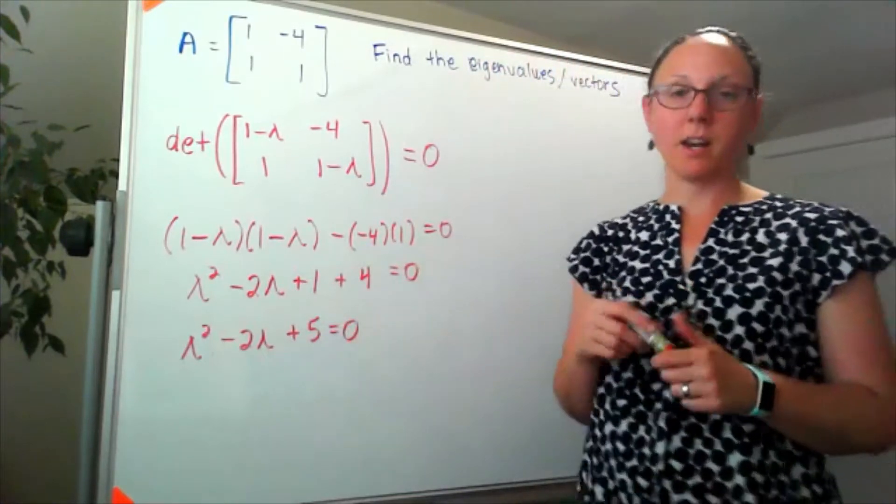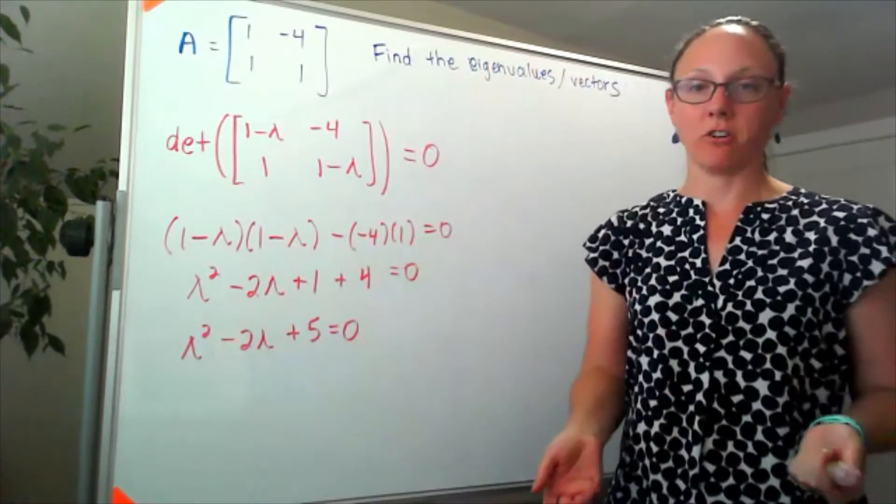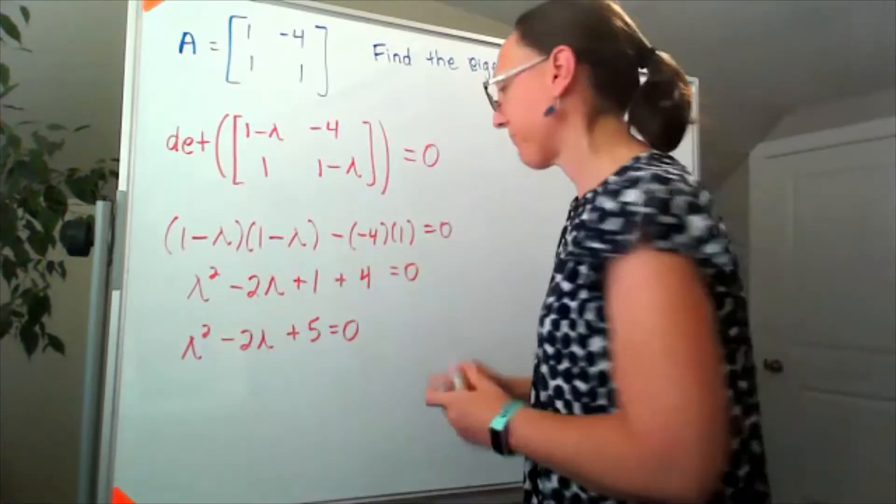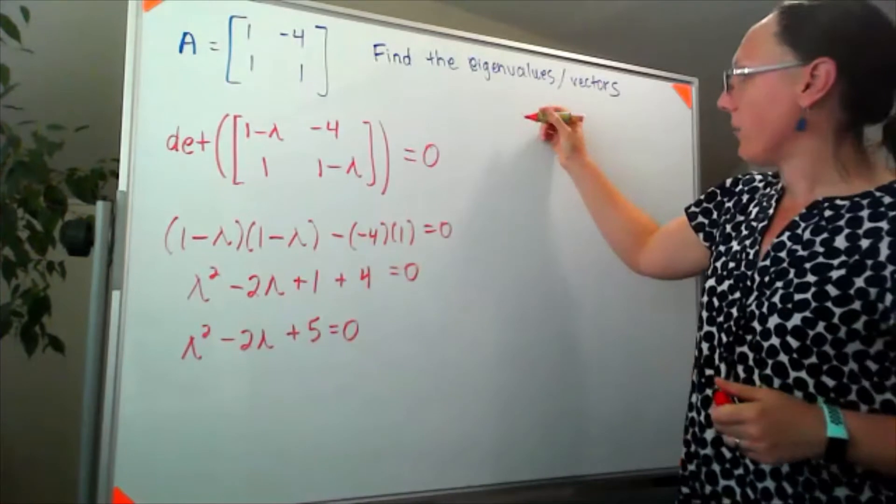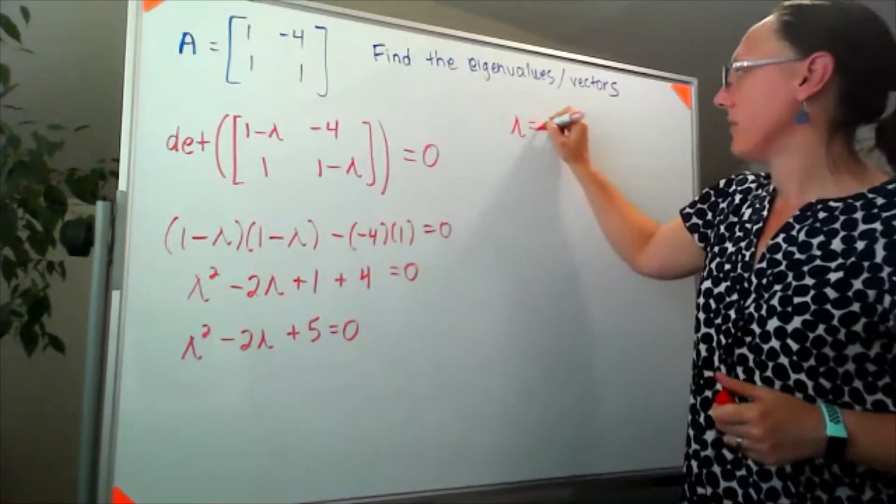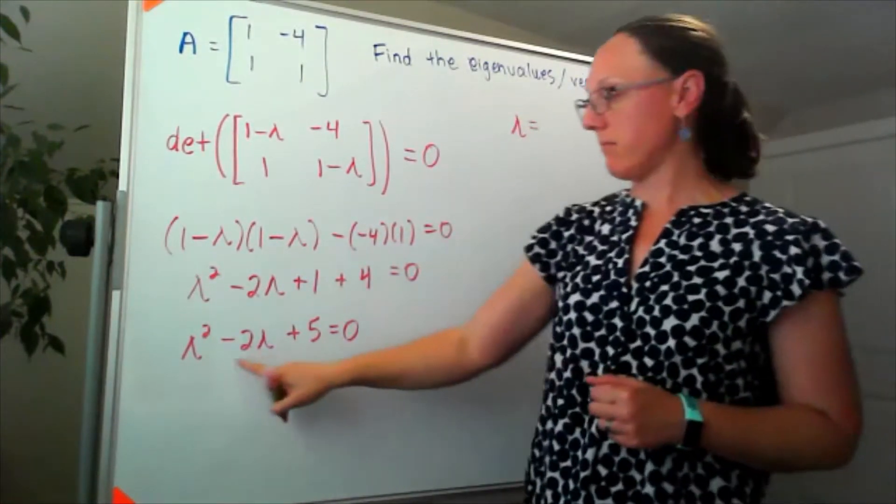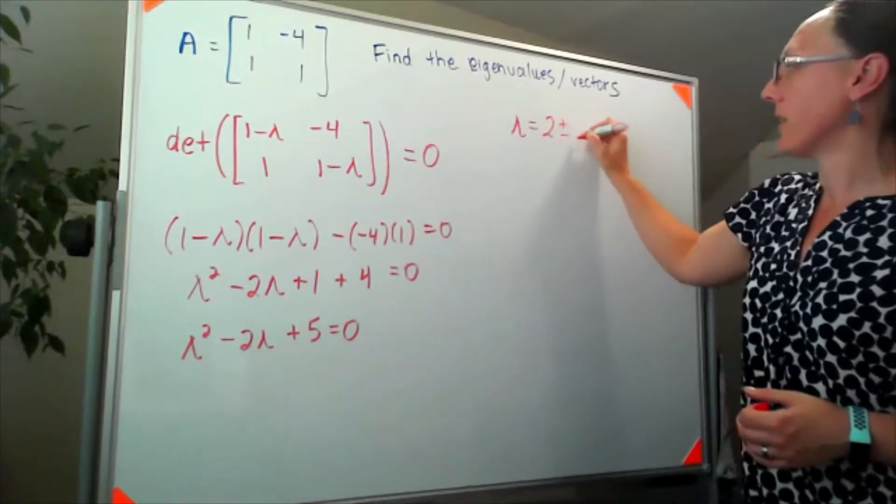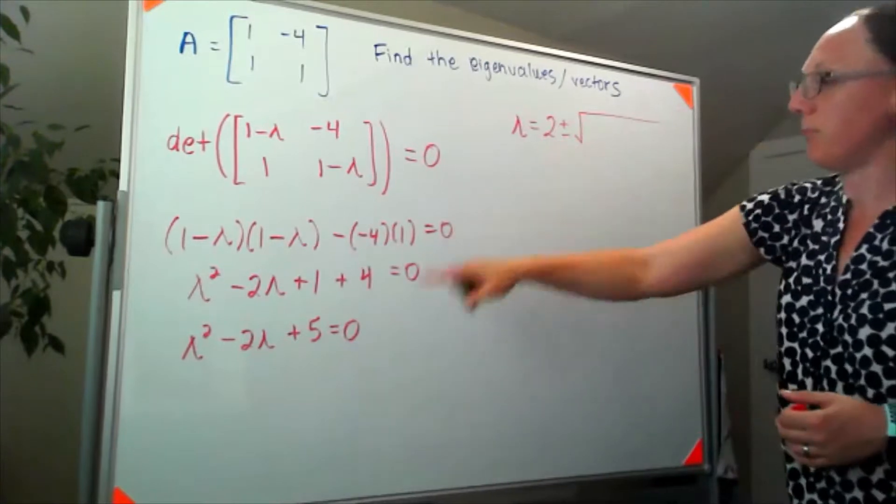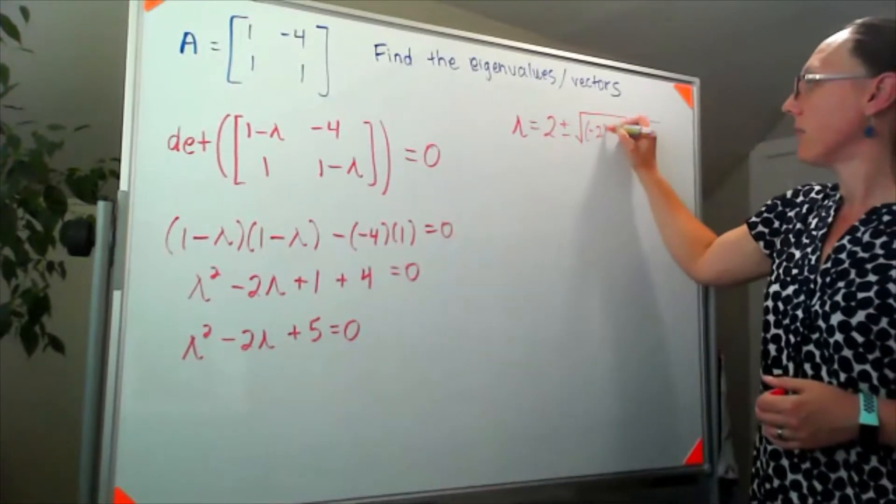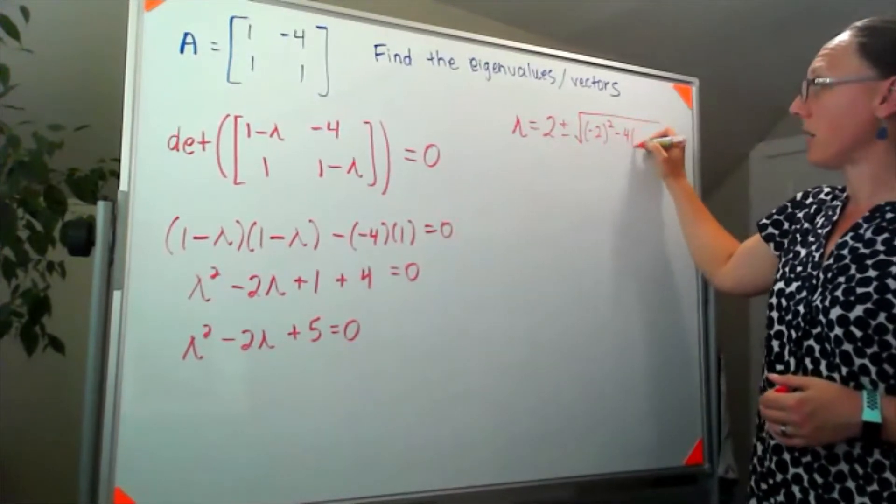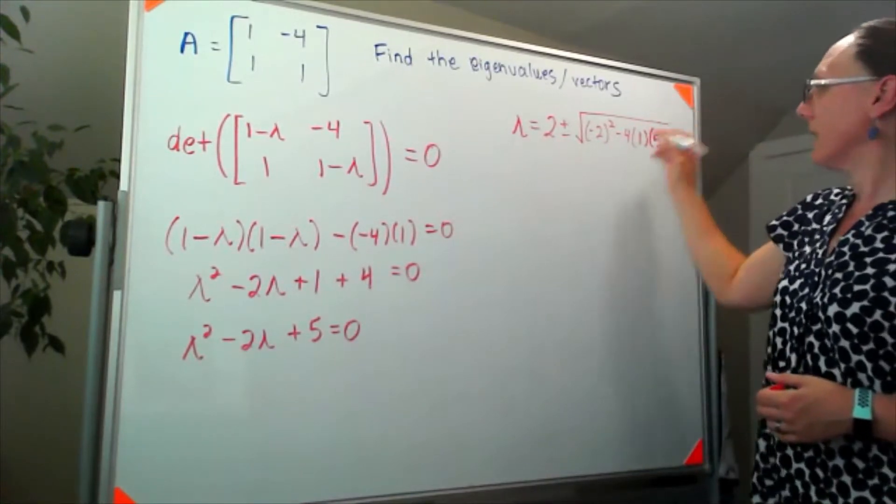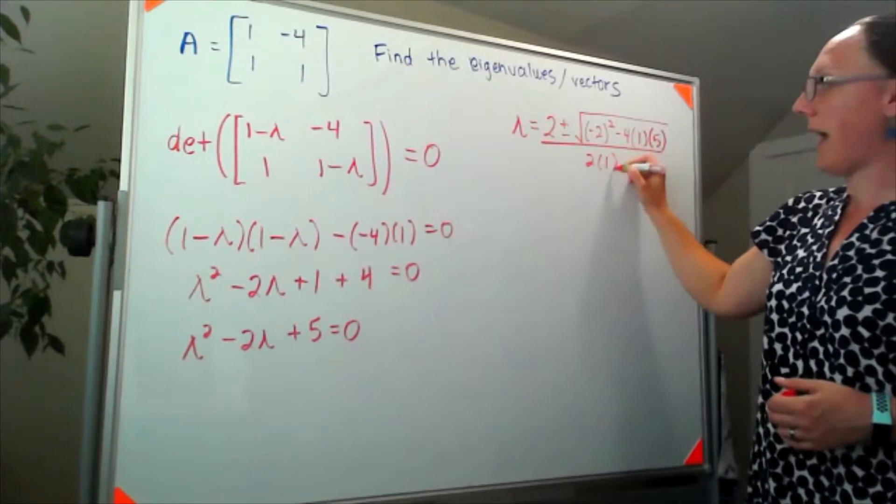Now I was mean and I did not give us something that factors, so if it doesn't factor we have to use quadratic formula. I am looking at lambda equals negative b, so negative negative 2, that's 2, plus or minus the square root of b squared minus 4 times a times c all over 2a.